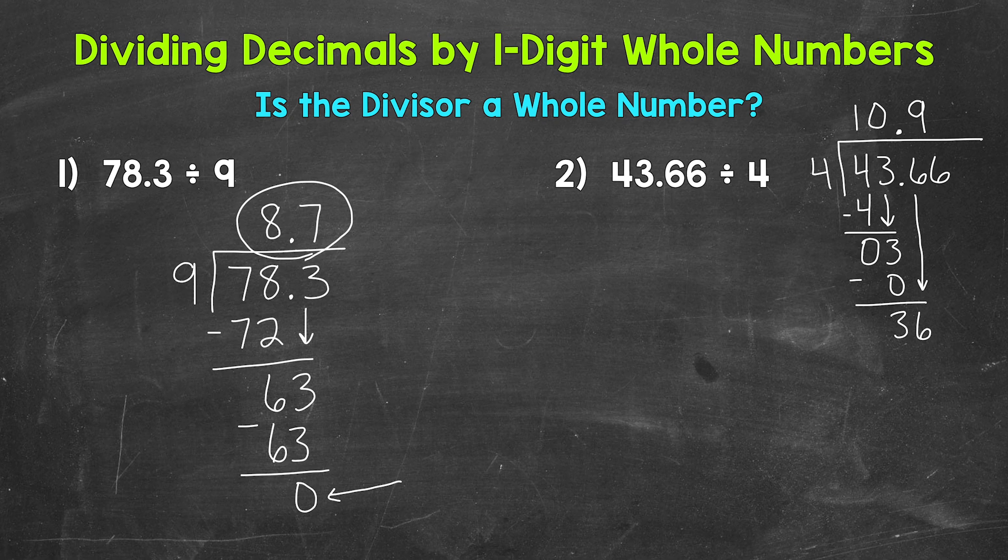Multiply. 9 times 4? 36. Subtract. 36 minus 36 is 0. And then bring down. That's 6. We have 6 there. And we repeat.